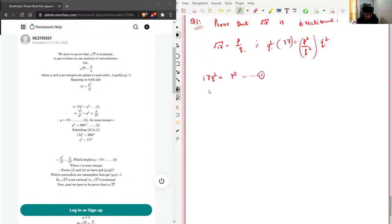Then in this equation, we'll be dividing both sides with 17 and multiplying both sides with Q, so this will become P square over 17 equal to Q square. Now that means P equal to 17 R, and let's say this is our second equation for some integer R.